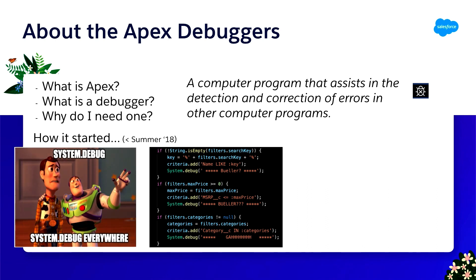Prior to 2018, you're probably very familiar that all of your debugging looked like system debug statements, and some of you may still use them today. But prior to 2018, this was really your only option — you could add a debug line right in your code to say you've stopped here, this is what my variable looked like, then make some changes, rerun it, make some more changes, until you finally figured out what went wrong.